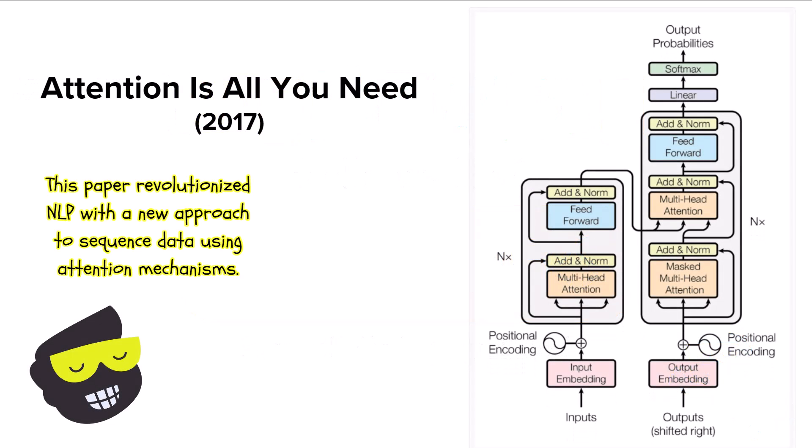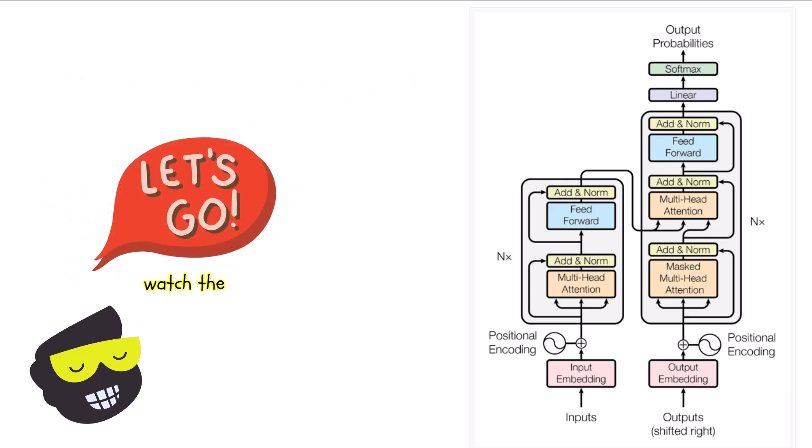Transformers were introduced by a team of researchers from Google Brain in their groundbreaking paper, Attention is All You Need. This was published in 2017, revolutionized natural language processing by introducing a new way to handle sequence data using attention mechanisms. In this video, we're going to focus on the Transformers architecture, and later we'll focus on the attention mechanism part. So, let's kick it off.